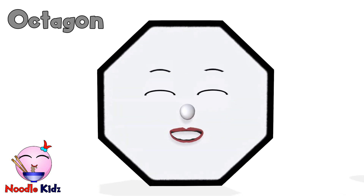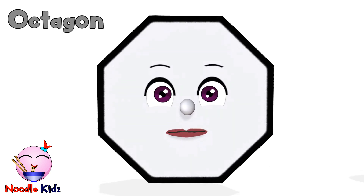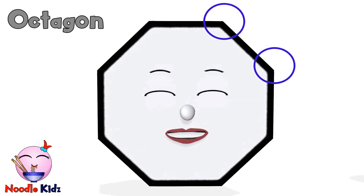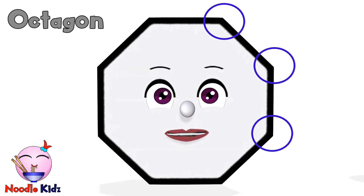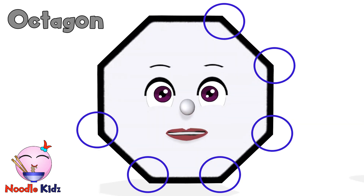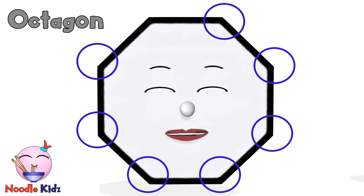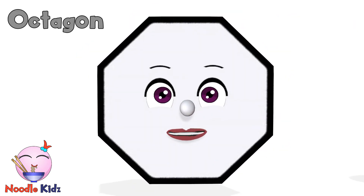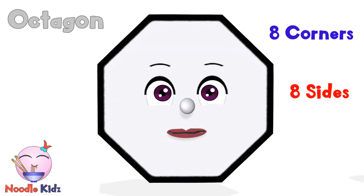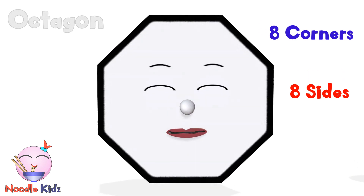I have 8 corners as well. Let's count: 1, 2, 3, 4, 5, 6, 7, 8. That's correct — I have 8 sides and 8 corners because I am an octagon.